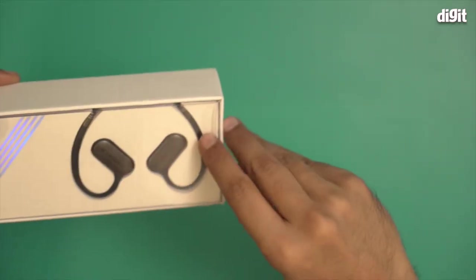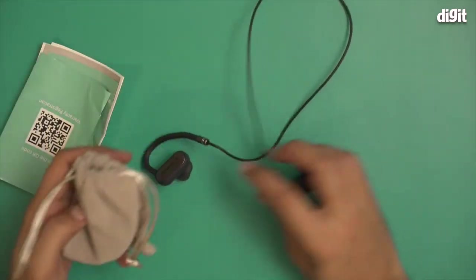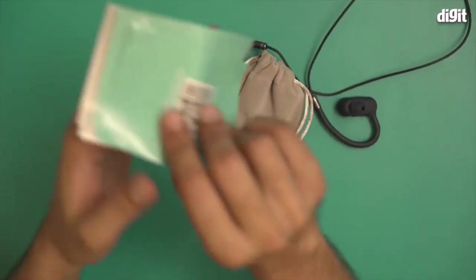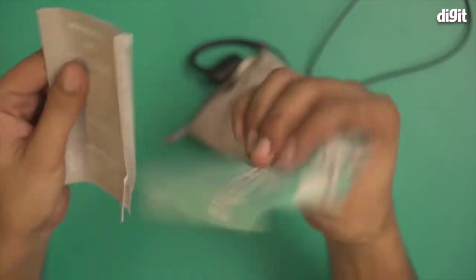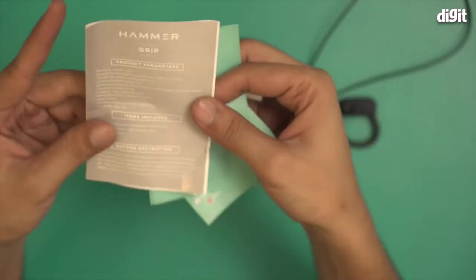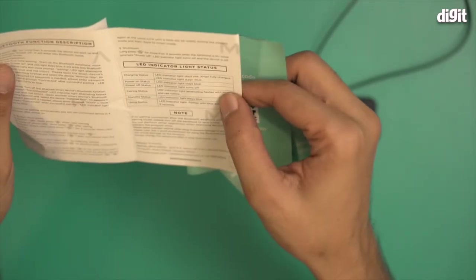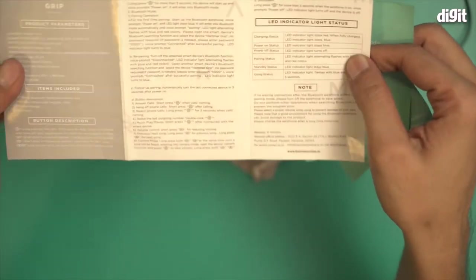These are the components of the box. First we have some documents. These are warranty information from Hammer, and this is the user manual and product information manual for the hammer grip sports earbuds. You should read it at least once.